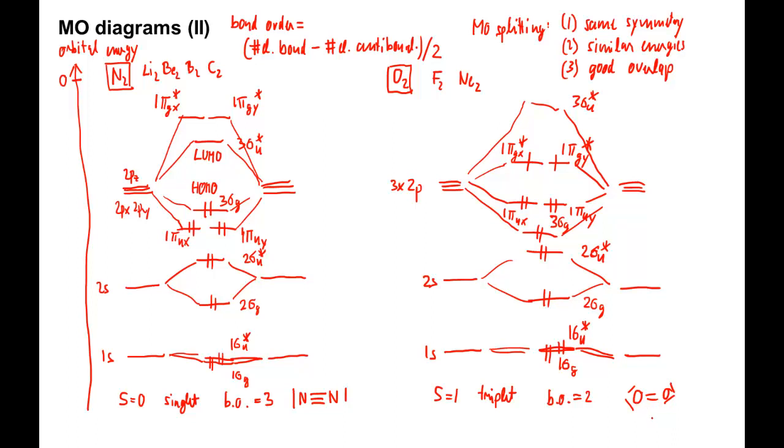In summary, we have seen how to construct MO diagrams for homonuclear diatomics. The three basic rules to determine MOs from AOs are based on symmetry, energy difference, and spatial overlap of the atomic orbitals. We have defined the bond order, which is a simple measure for the strength of a bond based on the MO diagram. And we have derived from the MO diagrams that dinitrogen is a spin singlet, whereas dioxygen is a spin triplet in its ground state.